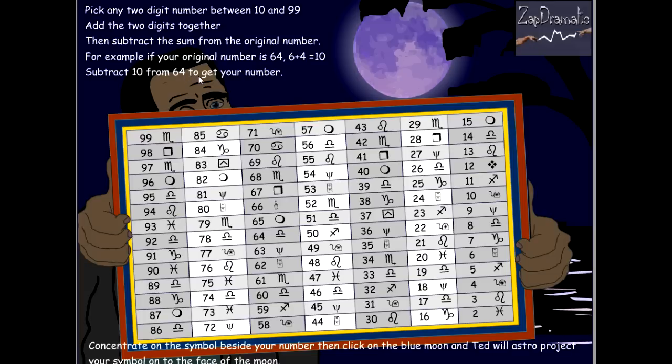And, alright, pick a two-digit number between 10 and 99. Go! 70! Alright, add the two digits together, then subtract the sum from the original number. So, 70 minus 7 is 63.